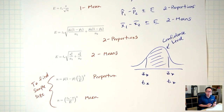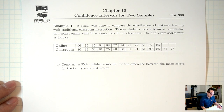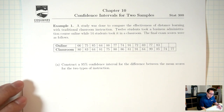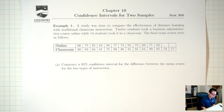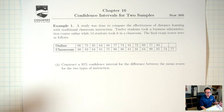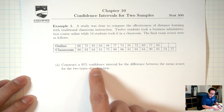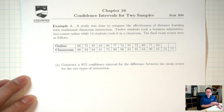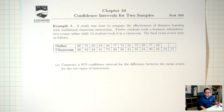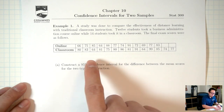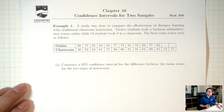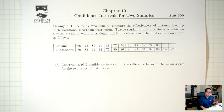Alright, let's try some examples. Example one: a study was done to compare the effectiveness of distance learning with traditional classroom instruction. Twelve students took a business administration course online, while 14 students took it in the classroom. The final exam scores were as follows. Part A: construct a 95% confidence interval for the difference between the mean scores for the two types of instruction. The first question is: are we talking about proportion or mean? It says 'the difference between the mean,' so definitely mean.